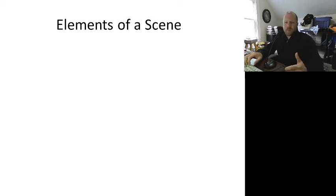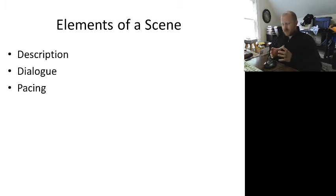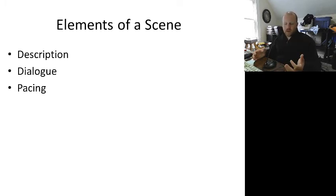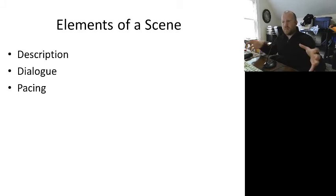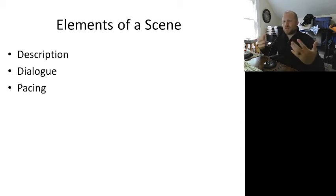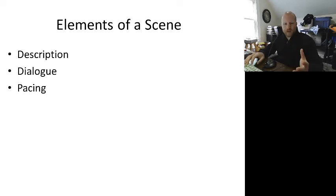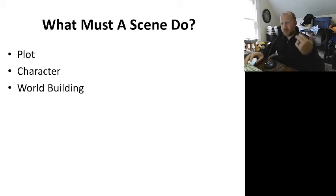Elements of a scene — again, for people that are more experienced writers, really basic things: description, dialogue, and pacing. That's what basically comprises the elements of a scene. Yes, there are more than that — there is obviously the dialogue, internal dialogue, narrative summary, and other things that kind of make up the prose of a scene. But for the simplicity of it, description, dialogue, and pacing tends to work well to get across the idea of what takes place in a scene. So all that very boring stuff you may already know — let's get right through that.